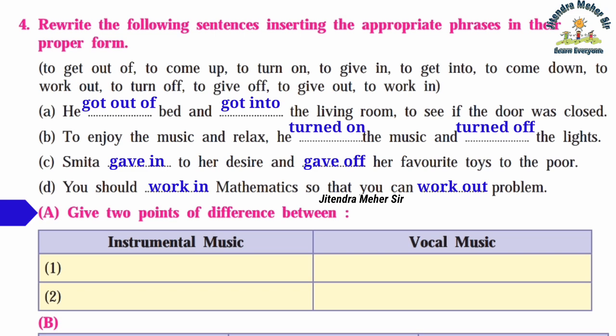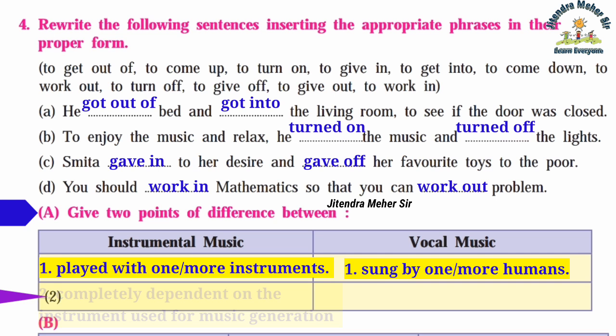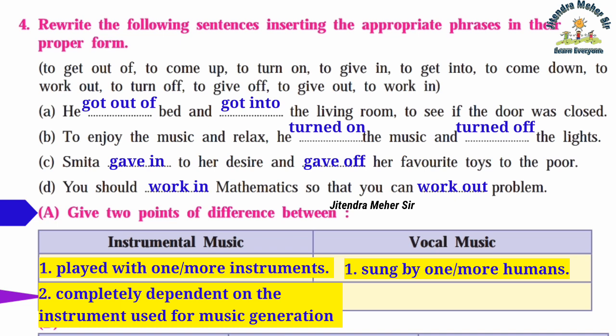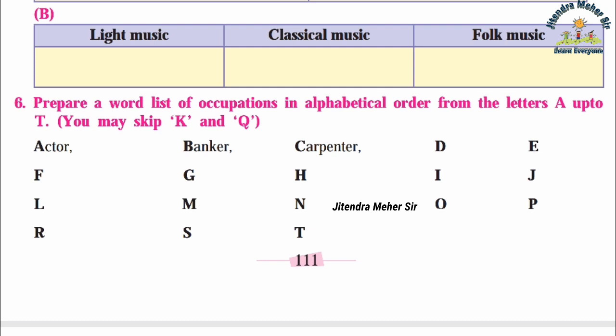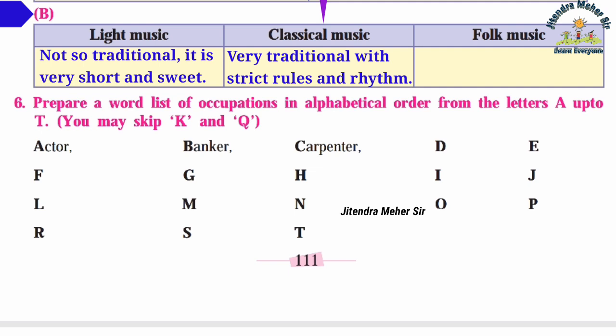Activity five: Differences between types of music. Instrumental music is played with one or more instruments and is completely dependent on the instruments used. Vocal music is sung by a singer and depends entirely on the voice. For light, classical, and folk music: light music is not so traditional — it is short and sweet; classical music is very traditional with strict rules and rhythm; folk music is played or sung by ordinary people with no rules.